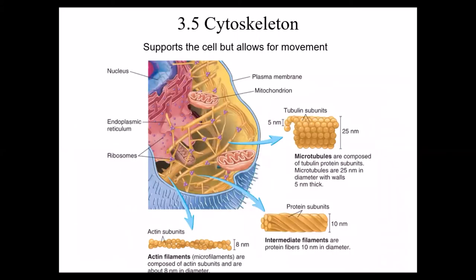Section five talks about the cytoskeleton. Your cells have a skeleton — not like your bone skeleton, but it is a structural way that you have support inside of the cell. We'll be talking about the proteins shown in the diagram here. There are three main types of protein structures that make up the cytoskeleton. The cytoskeleton supports the cell, just like our skeleton supports our body, and allows for the cell to move. The three main types are actin filaments, intermediate filaments, and microtubules.